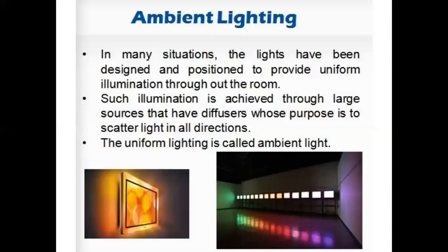The first one is ambient lighting. Ambient, as the meaning says, refers to uniform lighting. A simple example is a tube light — when you switch on the tube light, uniform light will be displayed in the complete area, whether it is a room or a hall. Such illumination is achieved by using large sources with diffusers whose purpose is to scatter the light in all directions, giving us uniform lighting in the entire area or space.